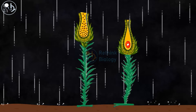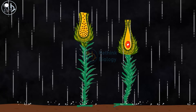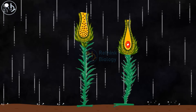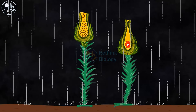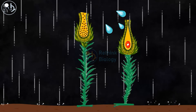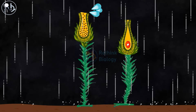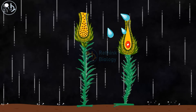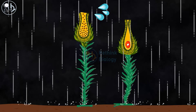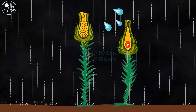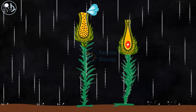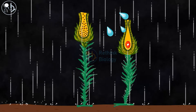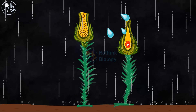Water is very important for the sexual reproduction of mosses, and that's why they are mostly found in moist areas. When drops of water fall onto the male gametophyte, it carries the sperm cell to the archegonia of the female gametophyte.